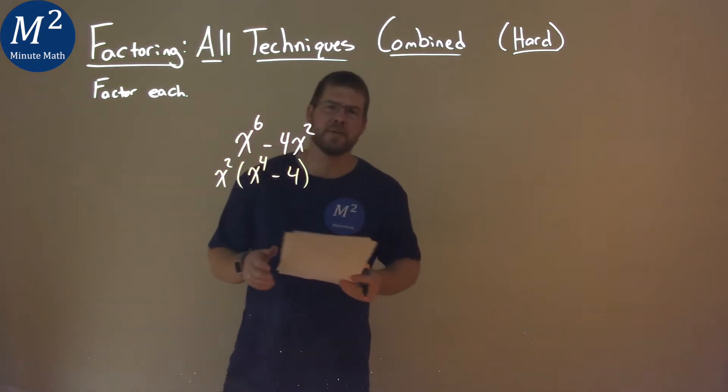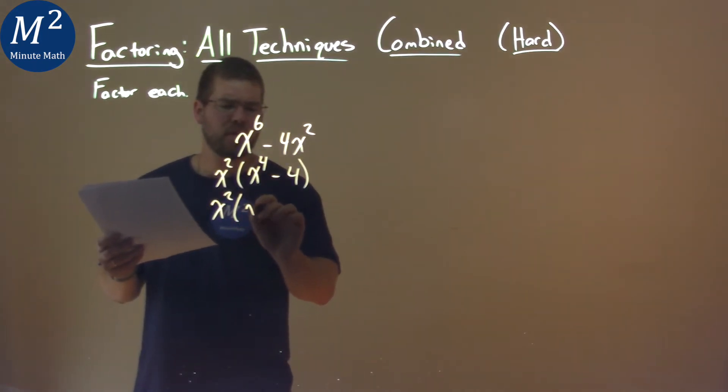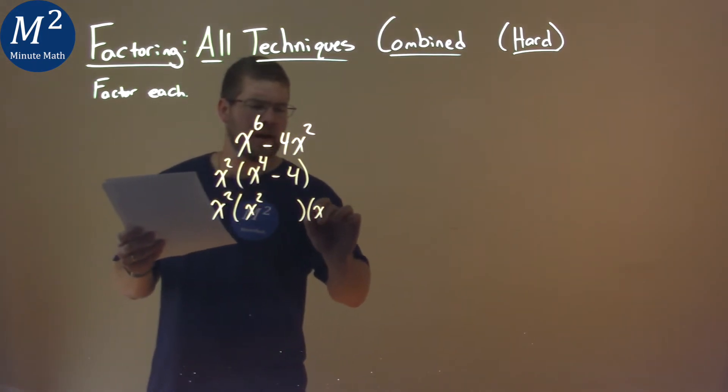Well, then from here, can we factor this even more? Well, the x squared stays out. For the x to the fourth, it can be some x squared times some x squared.